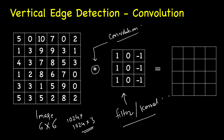This particular filter will be able to detect vertical edges. The star symbol here denotes convolution — note that in mathematics, convolution is not exactly element-wise multiplication and addition (you technically rotate the filter first), but for our purposes simply doing element-wise multiplication and addition will suffice.